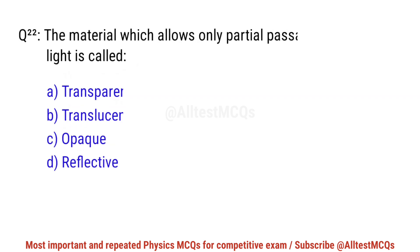Question No. 22. The material which allows only partial passage of light is called? Right option is B. Translucent.